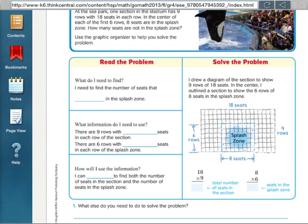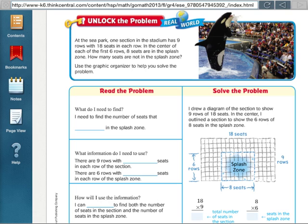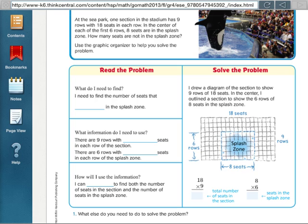In this specific problem, what do I need to find? I need to find the number of seats that are not in the splash zone. So I'm going to fill in this graphic organizer with the word 'not' - I'm finding how many are not in the splash zone.